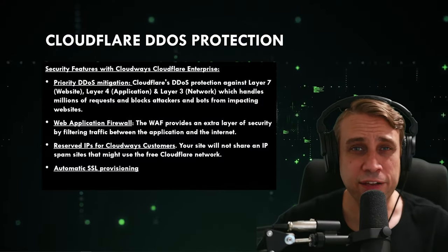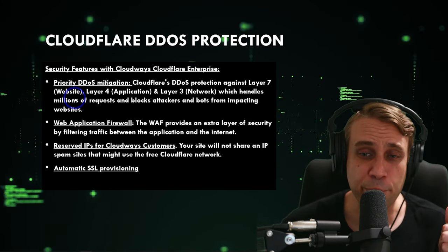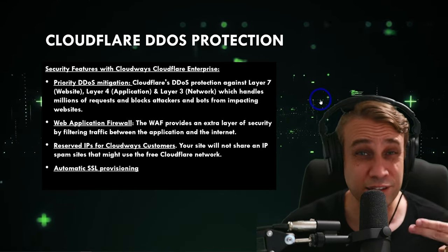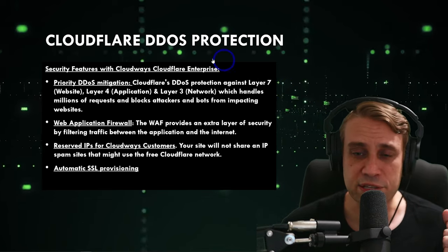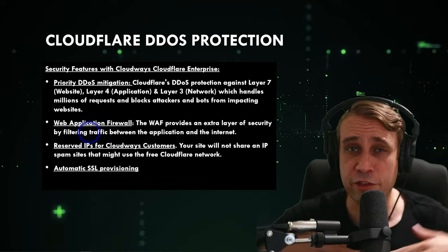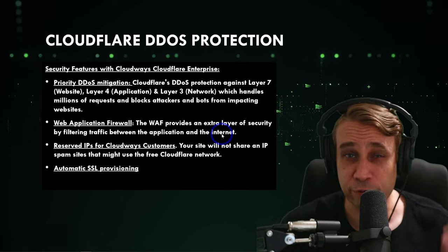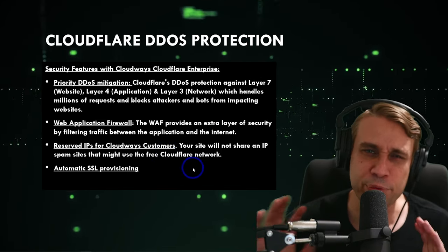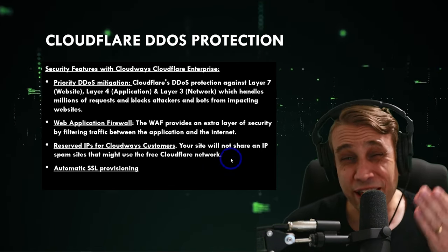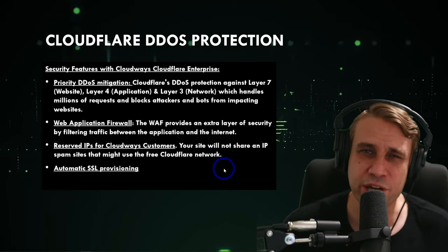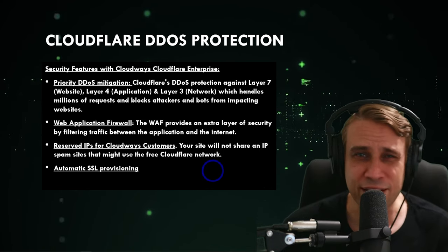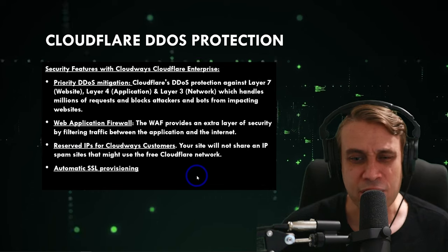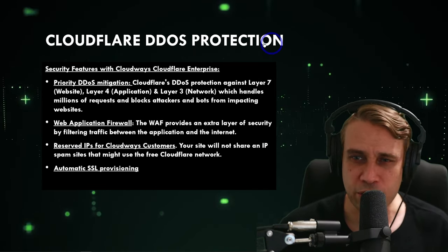Let's cover the main features you get when you add Cloudflare Enterprise to your Cloudways plan. Probably the most important is priority DDoS mitigation — in the event of an emergency, enterprise users get priority protection and their issues resolved first, which saves you downtime and protects your business. There's also a Web Application Firewall (WAF) running at the cloud level rather than the server level, filtering malicious traffic before it even hits your data center. You get reserved IP addresses for Cloudways customers, avoiding the issue of sharing an IP with spam websites on free plans, which can affect your domain reputation. Finally, automatic SSL provisioning makes sure everything is encrypted.